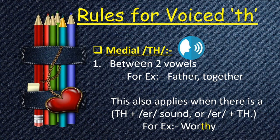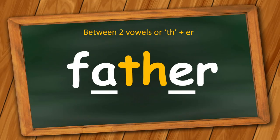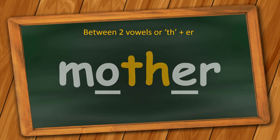Now the rules for medial voiced TH words: it comes between two vowels. For example, 'father' and 'together' — the TH is between two vowels. In 'father,' it comes in between A and E. This also applies when there is a TH plus UR sound, or UR plus TH sound words — for example, 'worthy.' The TH is voiced because of the UR sound before it. In the word 'father,' the TH is between two vowels A and E, so the TH is voiced — like 'father,' 'mother.'